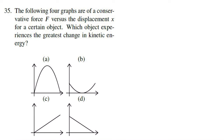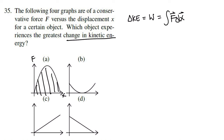Question 35 is another work and energy conceptual question. They ask which object experiences the greatest change in kinetic energy. We know ΔKE = work done = ∫F dx, which is the area under the F-x curve. So whichever graph has the greatest area under the curve has the greatest change in kinetic energy. The answer is A because compared to all other graphs, its area is clearly the largest, assuming the graphs are drawn to scale — which they always must be for this type of question.